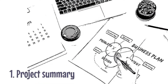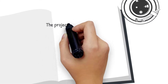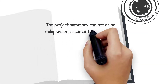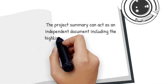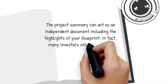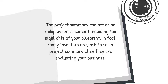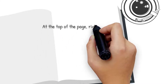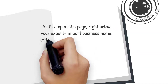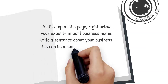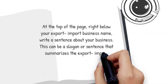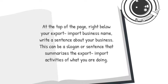1. Project Summary. The project summary can act as an independent document including the highlights of your blueprint. In fact, many investors only ask to see a project summary when they are evaluating your business. At the top of the page, right below your Export-Import Business Name, write a sentence about your business. This can be a slogan or sentence that summarizes the Export-Import activities of what you are doing.